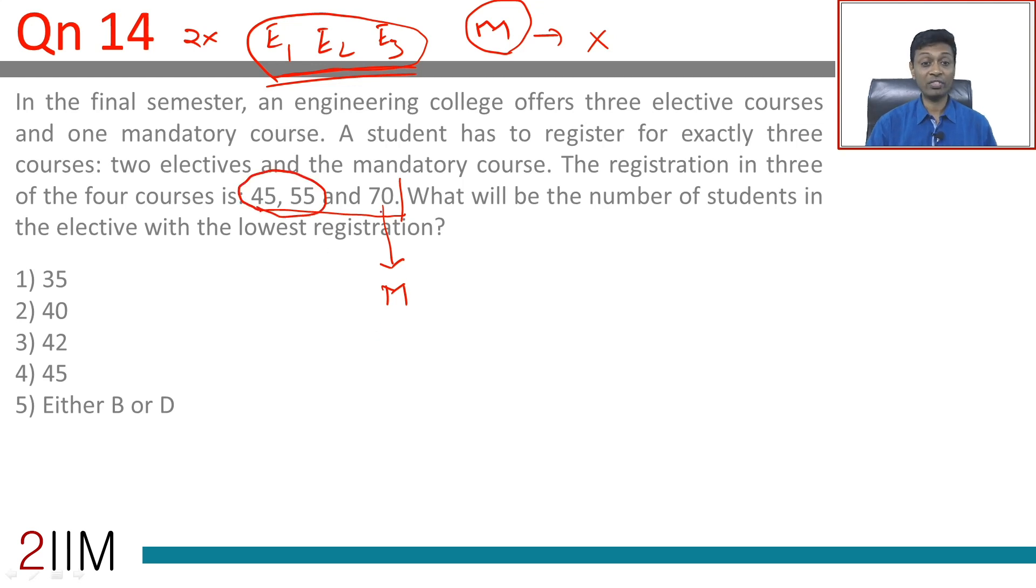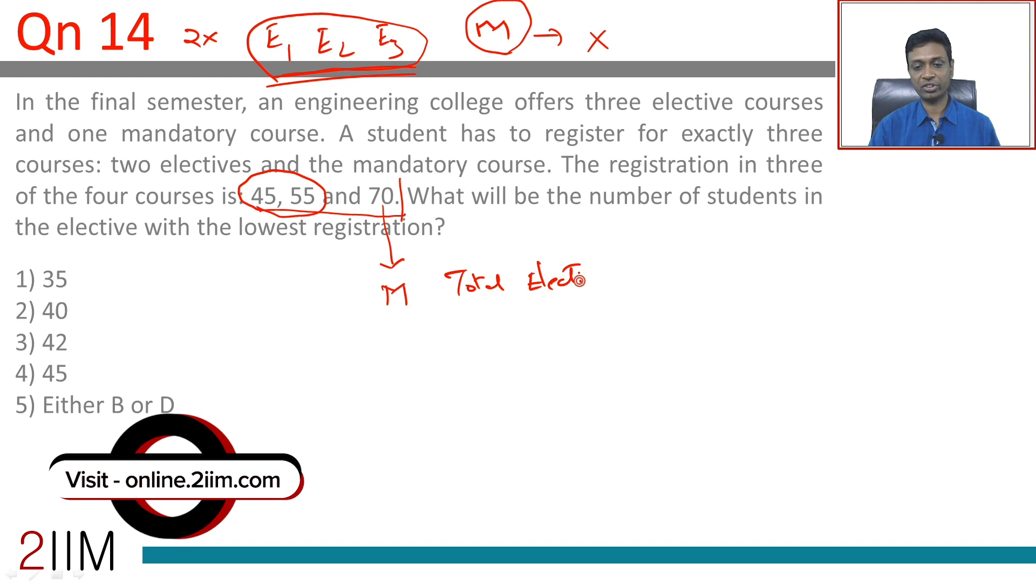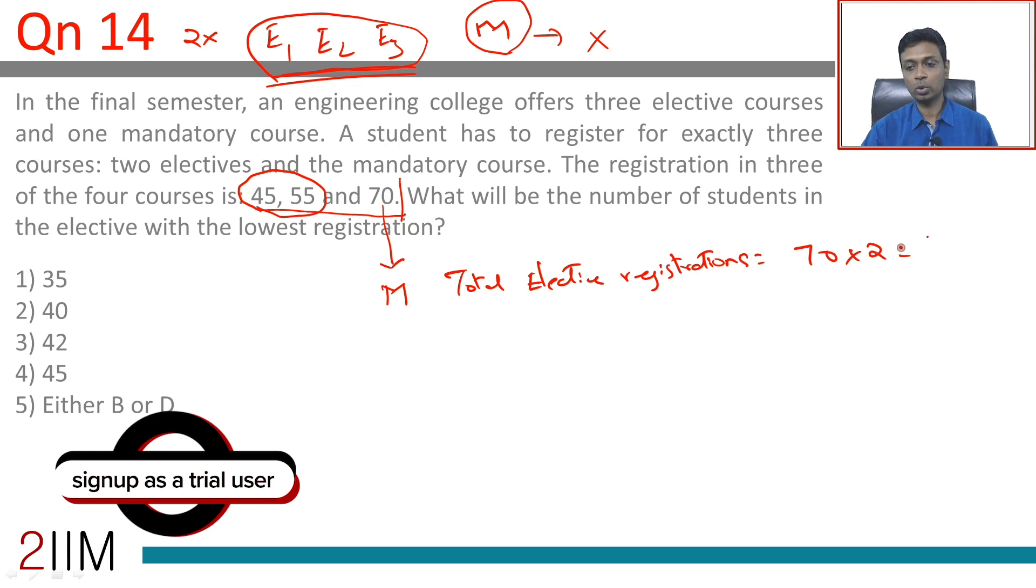So there are 70 students and the total elective registrations is 70 times 2, which is 140. Of which we have accounted for 45 and 55, these two add up to 100. We have 40 remaining that could be the third elective.